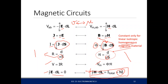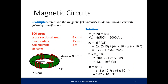Anyway, I'm saying all these concepts and new terms — let's see how it works. We have a toroid: a coil wound around a toroid that is just filled with air. The toroid has 500 turns, a cross-sectional area of 6 square centimeters, a mean radius of 15 centimeters — the radius from the center to the middle of the cross-sectional area — and the current in the coil is 4 amperes.